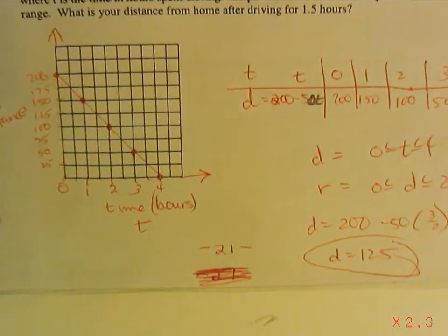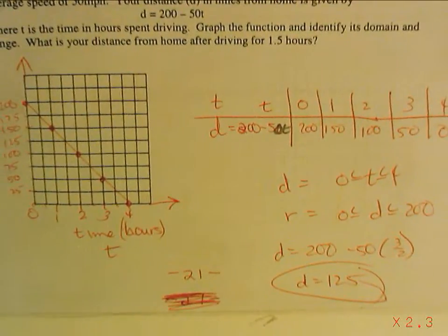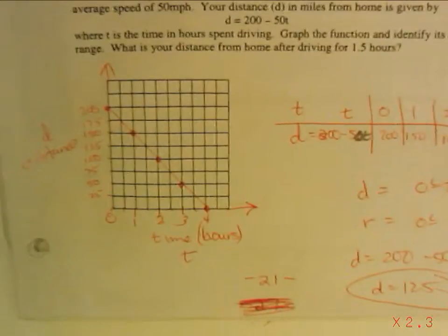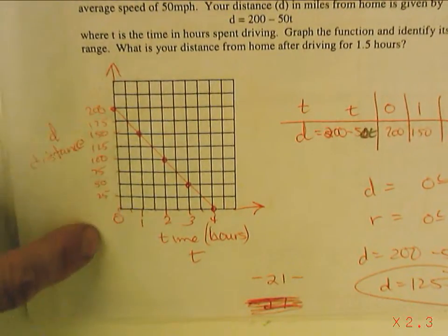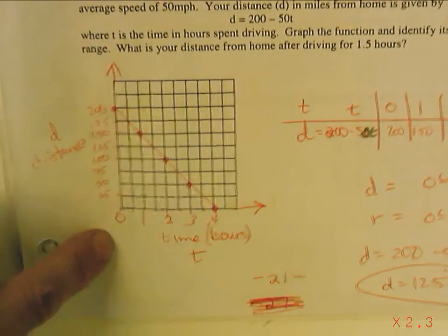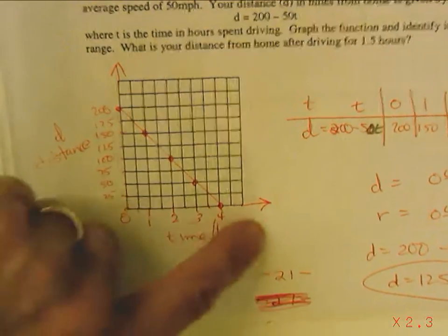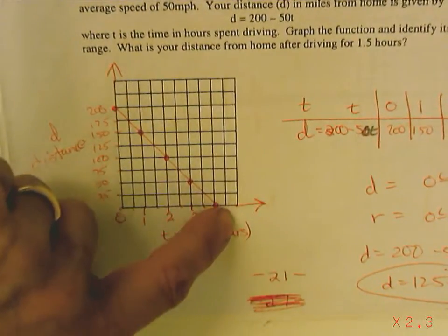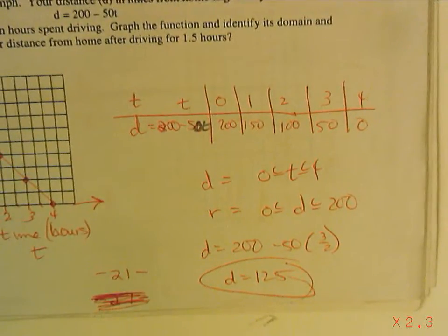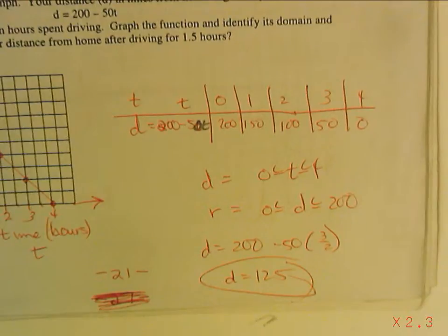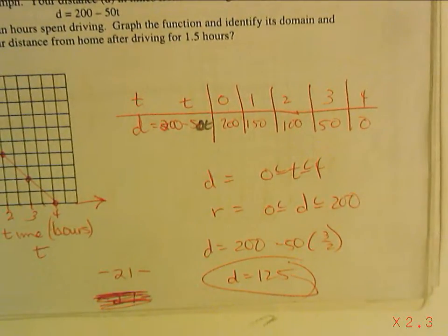Okay, so if you're done with number two, here I did distance. Distance, I went from zero to 200. And time, I counted in hours, I went from zero to four. I did a table to come up with values, and that's how I graphed the value, and I got an answer of 125.